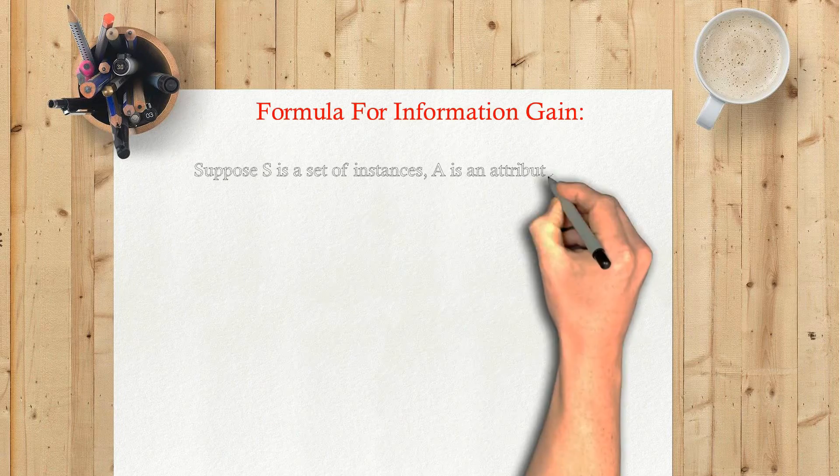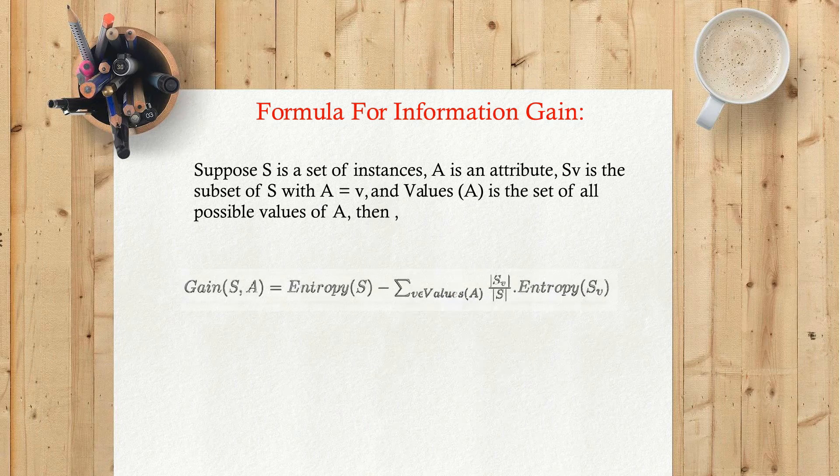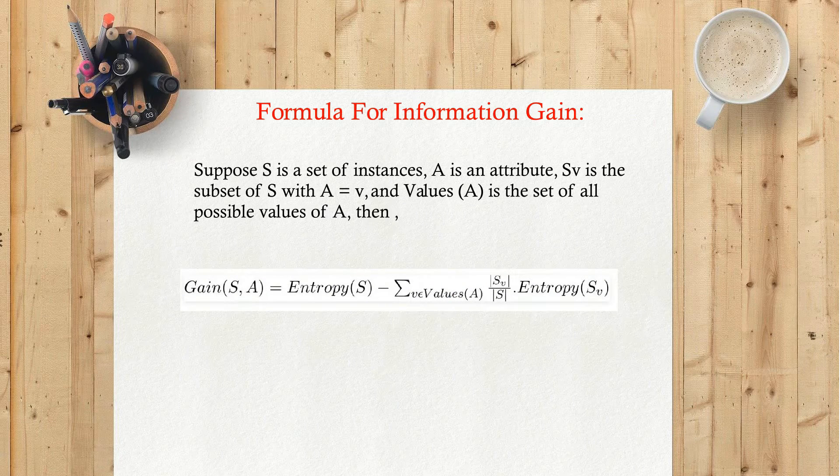Formula for information gain: Suppose S is a set of instances, A is an attribute, Sv is the subset of S with A equals v, and Values(A) is the set of all possible values of A.